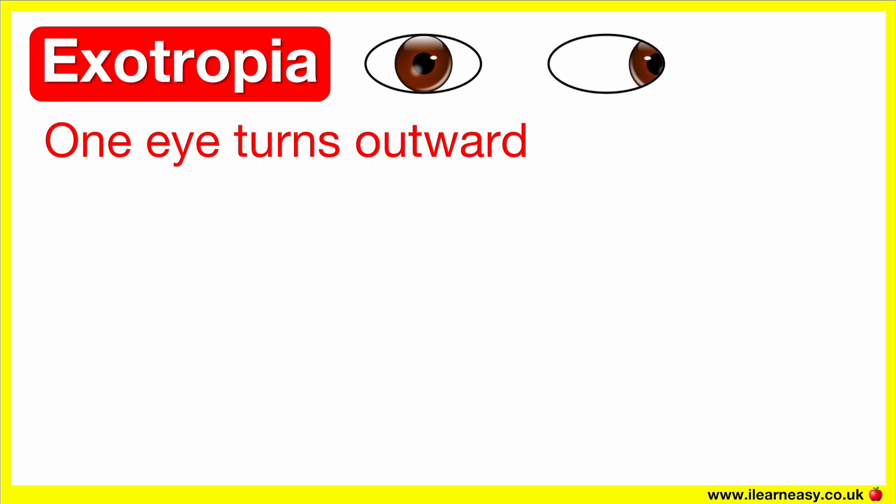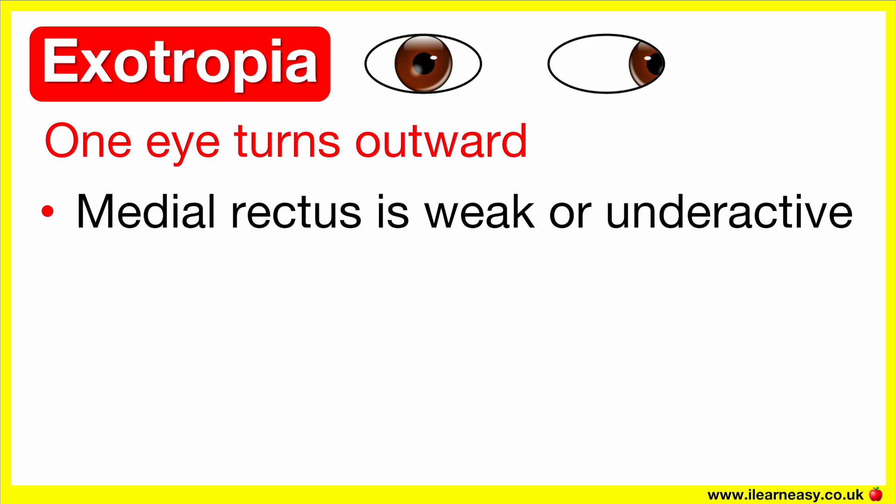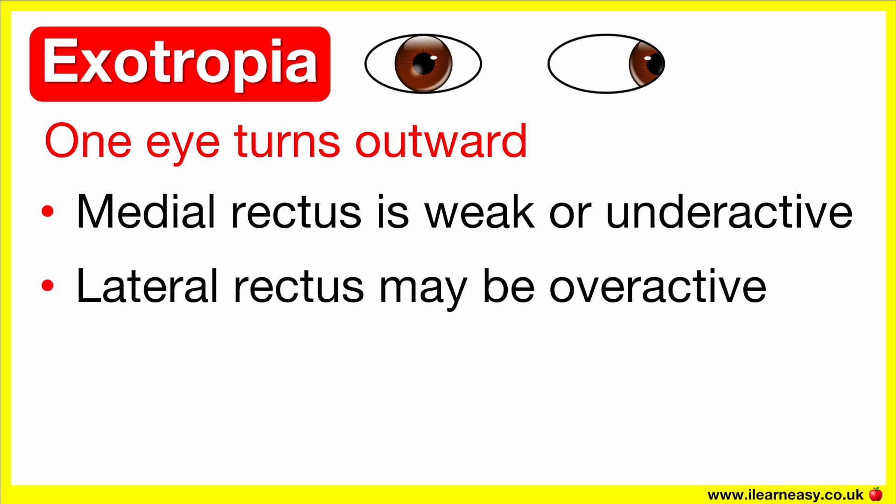Exotropia is when one eye turns outwards, away from the nose. It can be constant or intermittent, and it causes difficulties with depth perception and double vision. An exotropia can occur when the medial rectus, which usually pulls the eye inwards, is weak or underactive. Or it can be when the lateral rectus, which pulls the eye outwards, is overactive. As a result, the eye drifts outwards because the lateral rectus pulls more than the medial rectus.